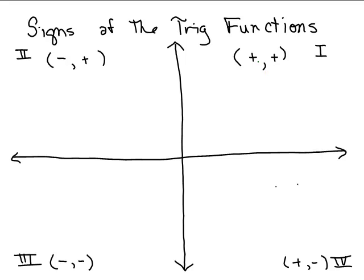In the first quadrant, both X and Y are positive in the ordered pair. In quadrant 2, the X value is negative and the Y is positive. In quadrant 3, the X coordinate is negative and so is the Y coordinate. And in the fourth quadrant, the X coordinate is positive and the Y coordinate is negative. What's most important is to know whether the X coordinate or the Y coordinate is positive or negative in each of these quadrants.